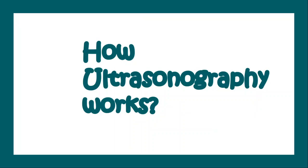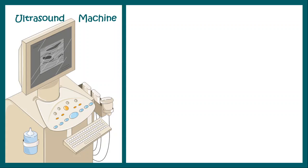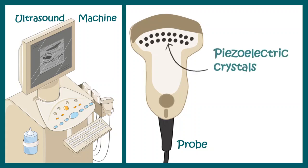Now how does ultrasonography work? Ultrasonography consists of an ultrasound machine console and ultrasound probes. These ultrasound probes contain piezoelectric crystals. These crystals, when supplied with electricity, can generate mechanical vibration and produce sound waves. On the other hand, when mechanical vibrations or sound waves come to these piezoelectric crystals, they again produce electrical patterns.